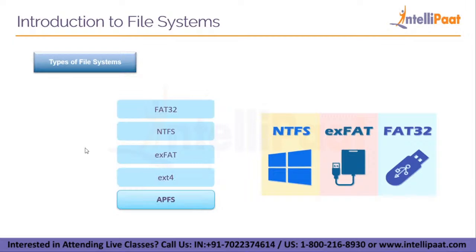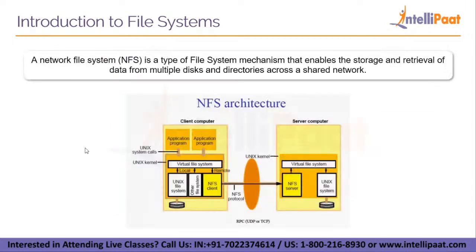APFS became the default file system for the Mac operating system. A Network File System, or NFS, is a type of file system mechanism that enables storage and retrieval of data from multiple disks and directories across a shared network. NFS enables local users to access remote data and files in the same way they access them locally. NFS version 4 (NFS v4) is the industry standard used by the Amazon EFS service.